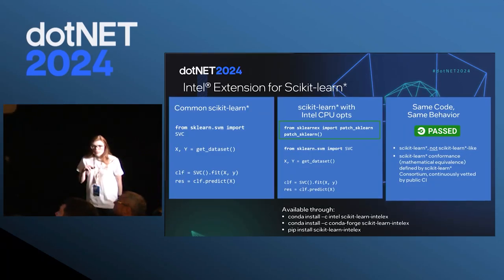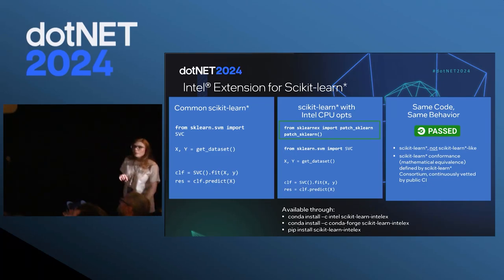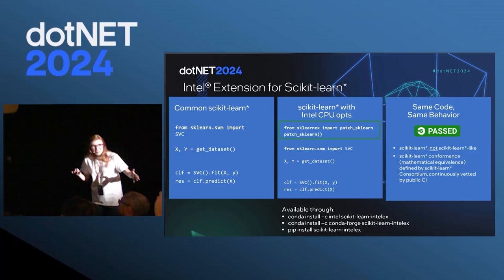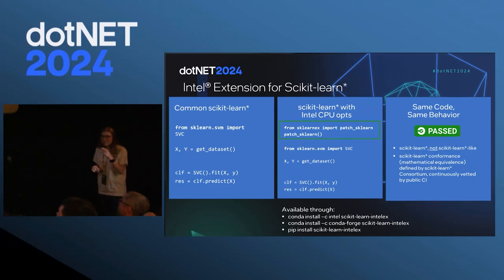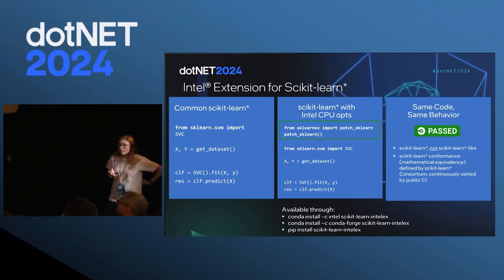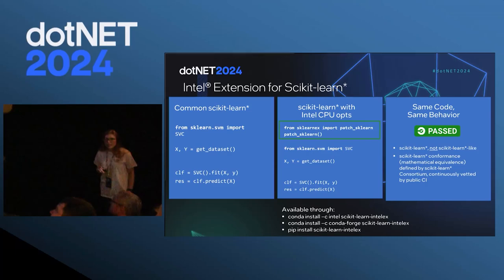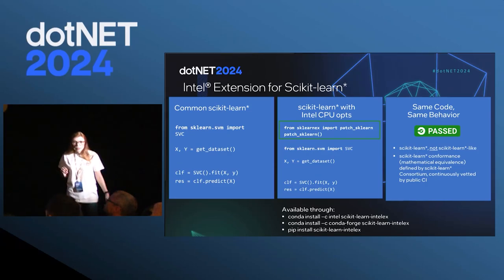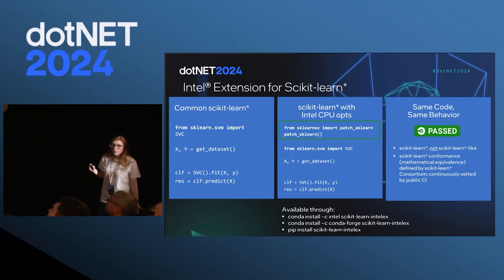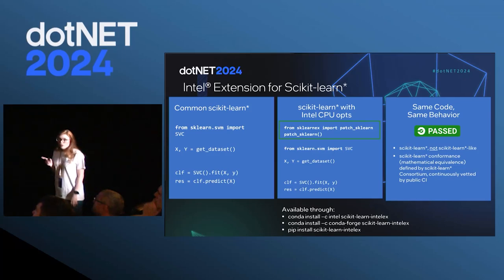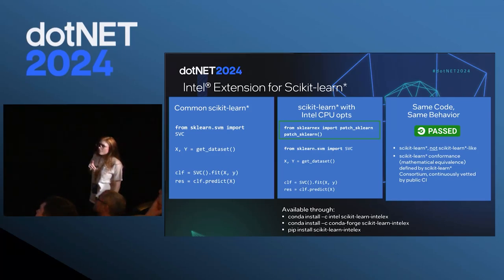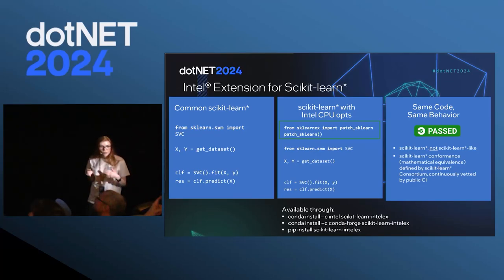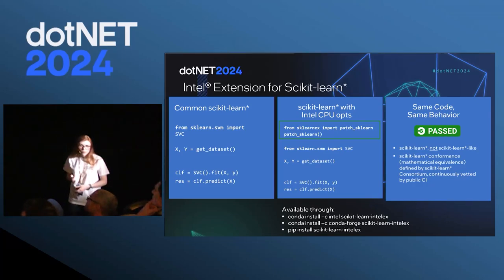Next, I'll talk about the scikit-learn extension. Assuming many of you have used scikit-learn, as you can see here with one line of code — one patch — you can get a very nice improvement. We've had various ways to optimize it over time and found this to be the easiest way. You can patch the whole code if you want, or just patch certain sections. All you need to do is install the scikit-learn extension and add these two lines of code.